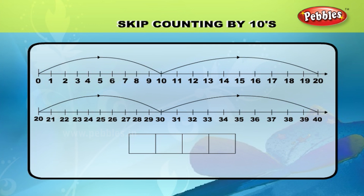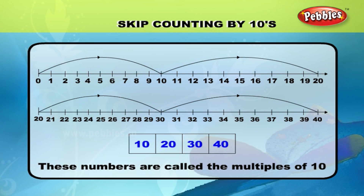Skip counting by tens. In the given number line, when you jump and skip count by tens, we arrive at the following numbers: 10, 20, 30, and 40. These numbers are called the multiples of 10.